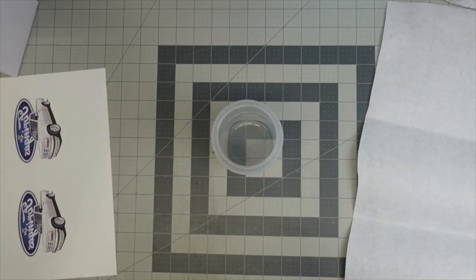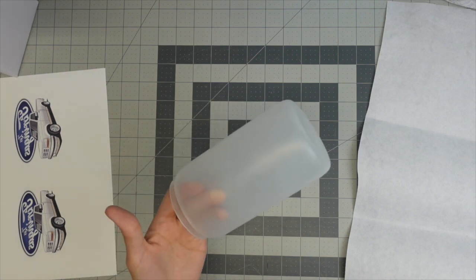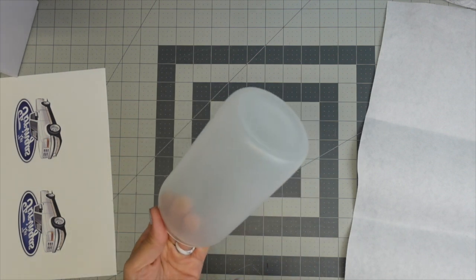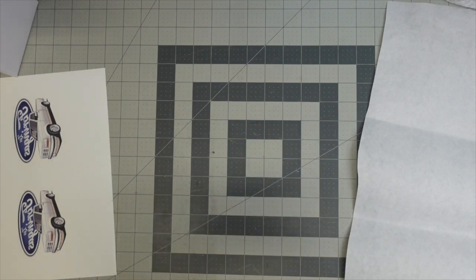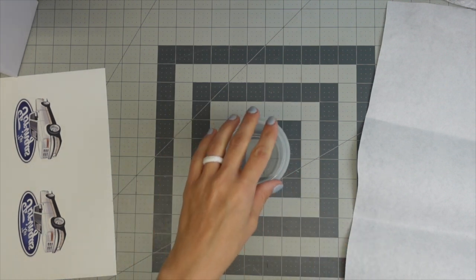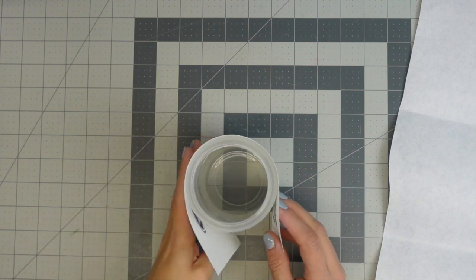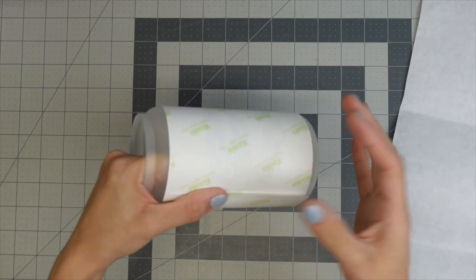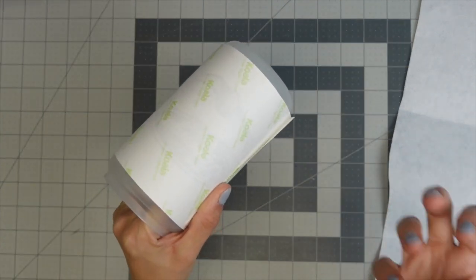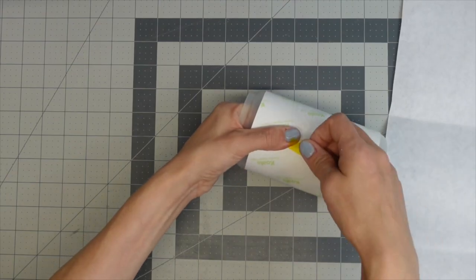You can either take some rubbing alcohol to clean it or some people use lint rollers, whatever method you prefer. You just want to make sure it's dry before you put your design on. Once you have cleaned it you want to take your design and wrap it around. You want to avoid touching where you're going to sub on with your fingers as much as possible. You want to take some heat tape.